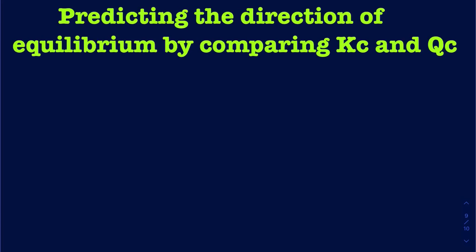Hello, everyone. In this lecture, we're going to be learning how to compare the Kc and the Qc to determine the direction of the equilibrium. Remember the Kc, or we can write it as just Keq, is a simple equilibrium constant expression, and the Qc is going to be your reaction quotient.